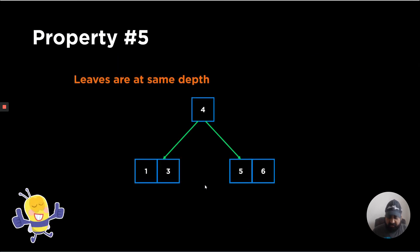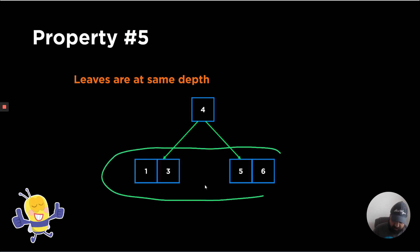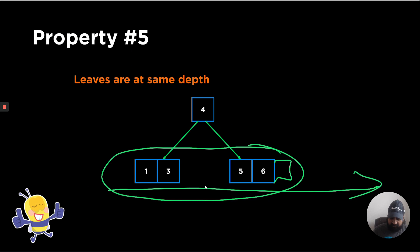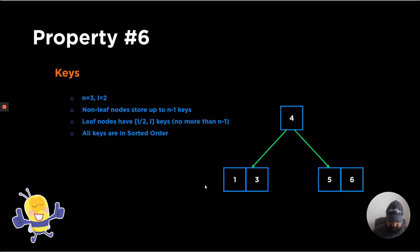The fifth property is that all leaves are at the same depth. Since we build this tree bottom-up, we first add to a leaf element and then it moves up, so the leaves always remain at the same depth — they are all at the same level.